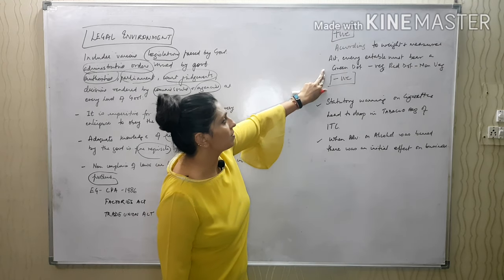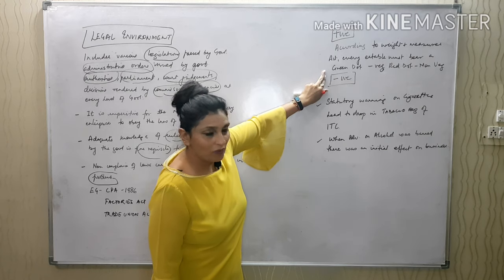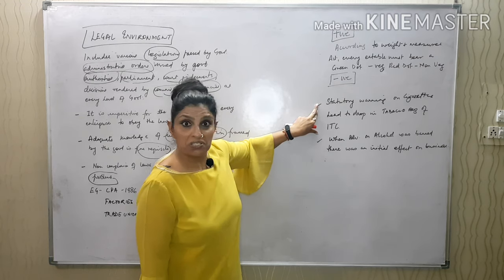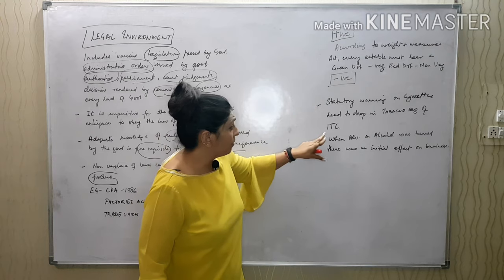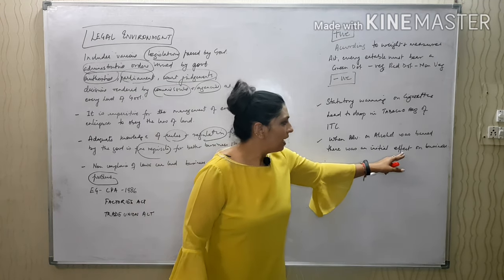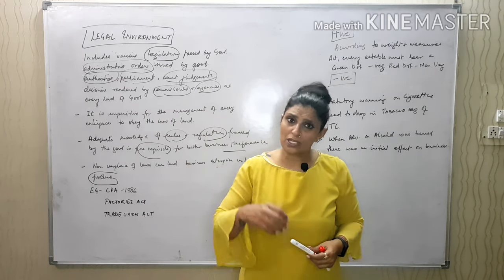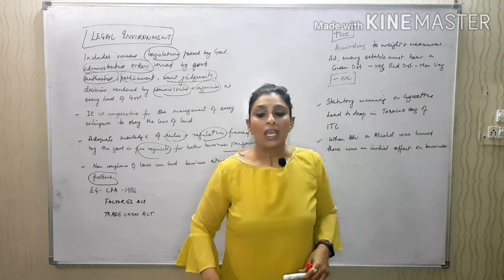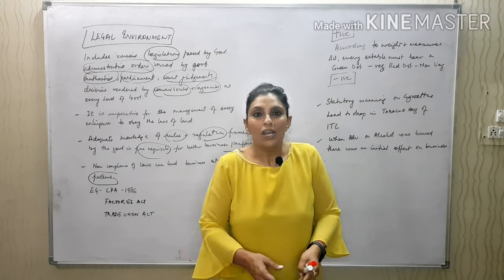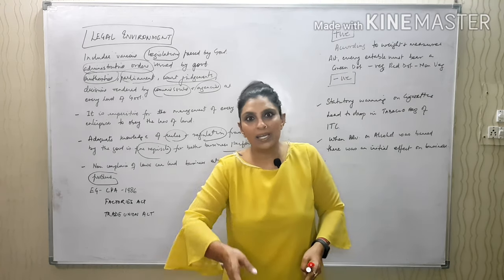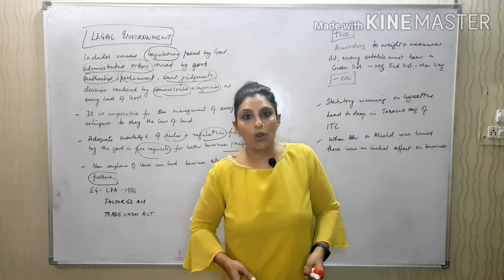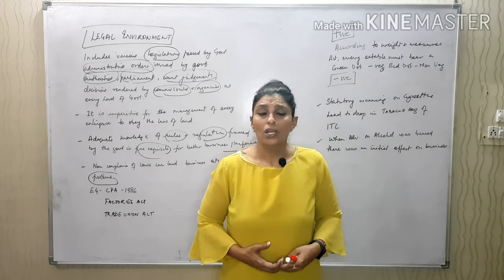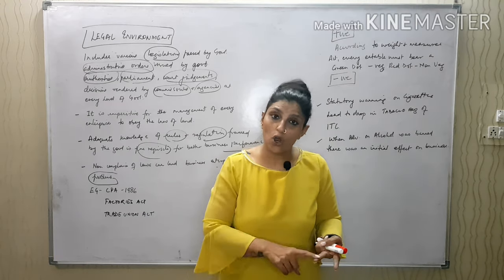Positive impact of legal environment: according to the Weights and Measures Act, every edible item must carry a green dot for veg and a red dot for non-veg. Negative impact: statutory warnings on cigarettes led to a drop in tobacco business; when advertising bans on alcohol were imposed, the business dropped immediately. Alcohol business was also affected when the government banned sale on main roads and highways because accidents were increasing. Business decisions depend on all these environments — legal, political, social, economic, and technological.